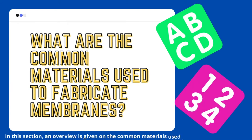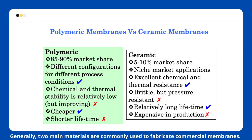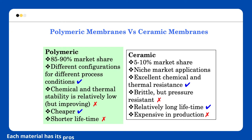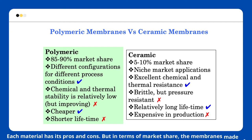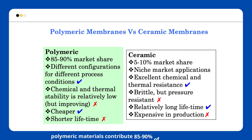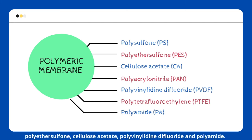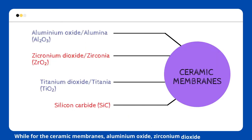In this section, we will provide an overview of the common materials used to fabricate membranes. Generally, two main materials are commonly used: polymeric materials and inorganic materials. Each has its pros and cons, but in terms of market share, membranes made of polymeric materials contribute 85–90% of the market. Common polymeric membrane materials include polysulfone, polyethersulfone, cellulose acetate, polyvinylidene difluoride, and polyamide. For ceramic membranes, aluminum oxide, zirconium dioxide, and titanium dioxide are commonly utilized.